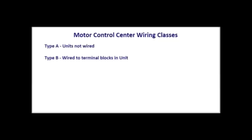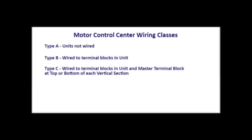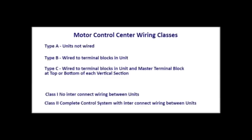Next, we'll go over NEMA wiring class designations. Type A indicates that the starter units are supplied without any wiring to terminal blocks. Type B stipulates that the wiring is connected to terminal blocks within the starter unit. Type C refers to units wired to master terminal blocks mounted in either the top or bottom of each vertical section. Class designations precede the type classification: Class 1 signifies there is no interconnection wiring between the units, and Class 2 provides a complete control system with interconnections between the units, which can be next to one another or in totally different vertical sections.